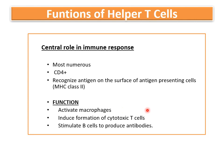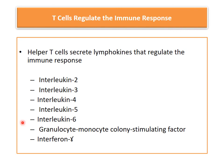Helper T cells play this role of overall regulation of the immune system by secreting special molecules known as lymphokines. These are small protein molecules which act like hormones and regulate the immune system. These include interleukin 2, 3, 4, 5, 6, granulocyte-monocyte colony stimulating factor, and interferon gamma. Interleukins, as the name suggests, are the communication signals between two leukocytes.